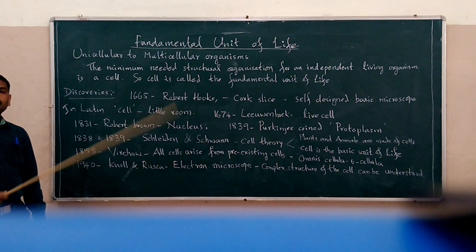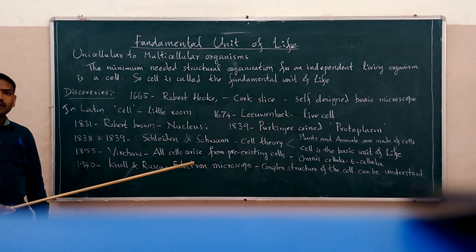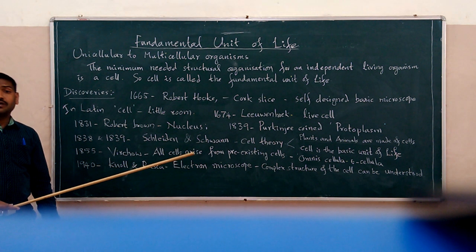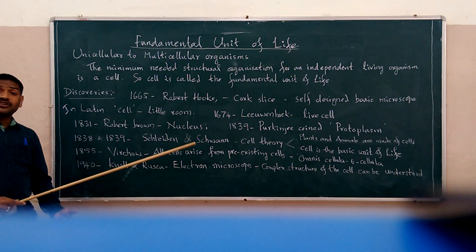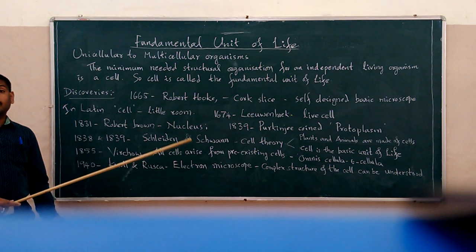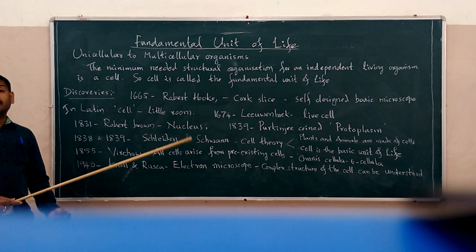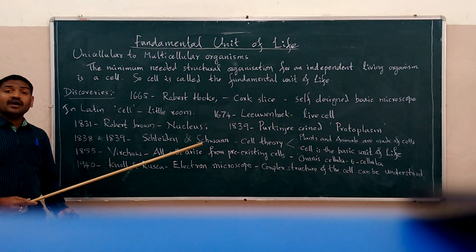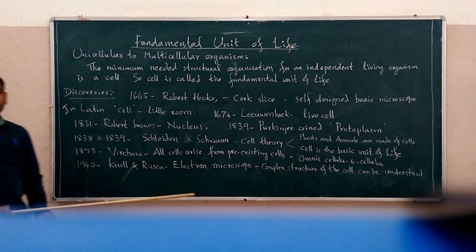In the next topic, we will understand the various types of cells, why cells have different shapes and sizes, the basic organization of the cell, and in detail each and every component of the structural organization of the cell.